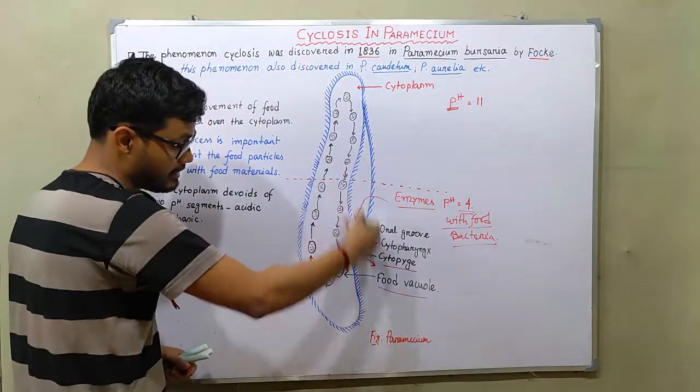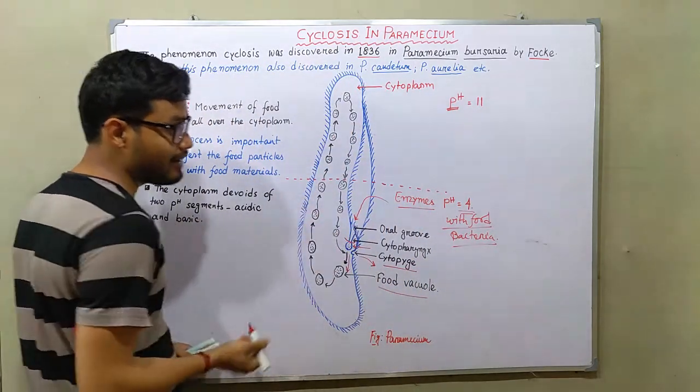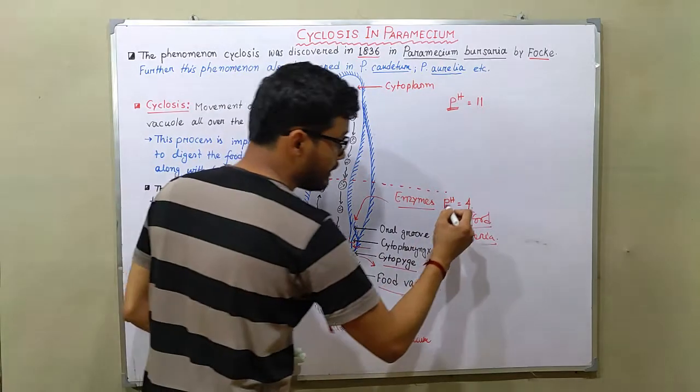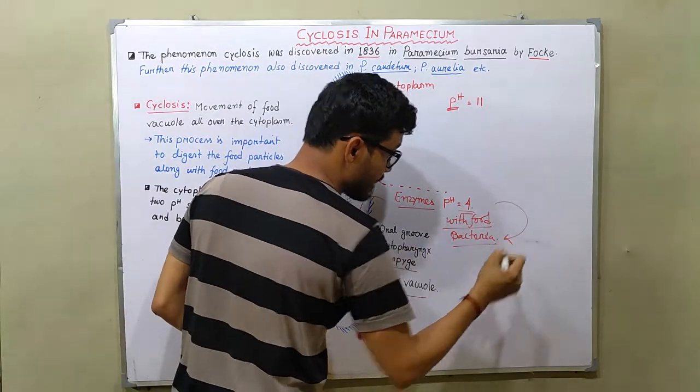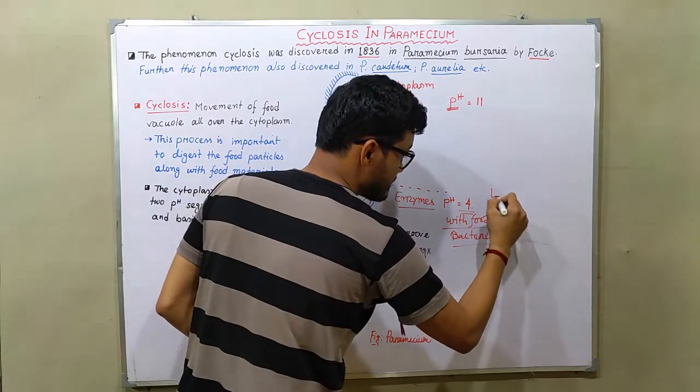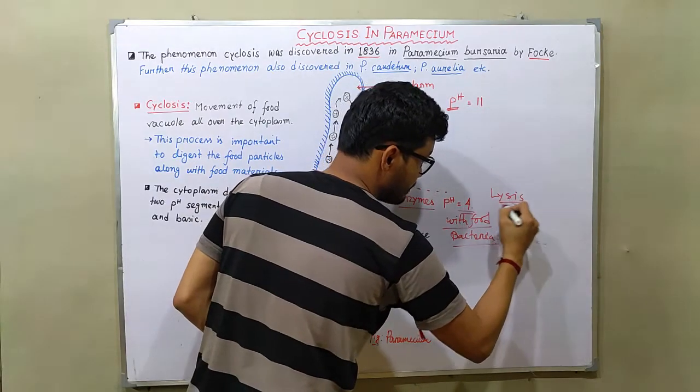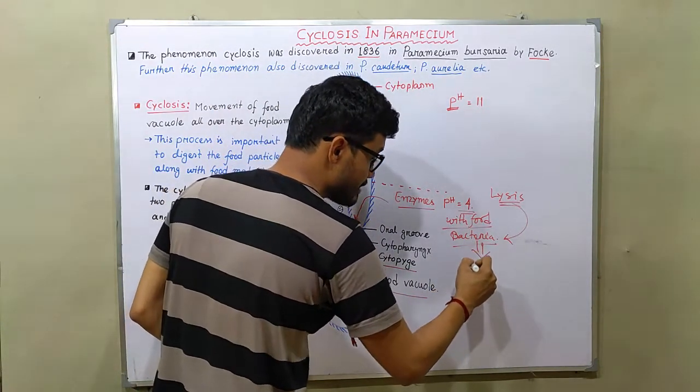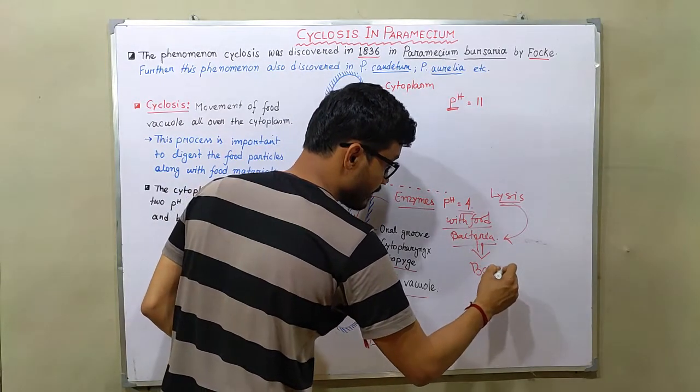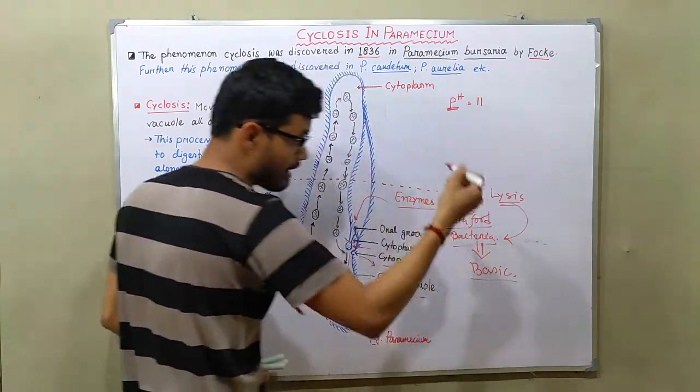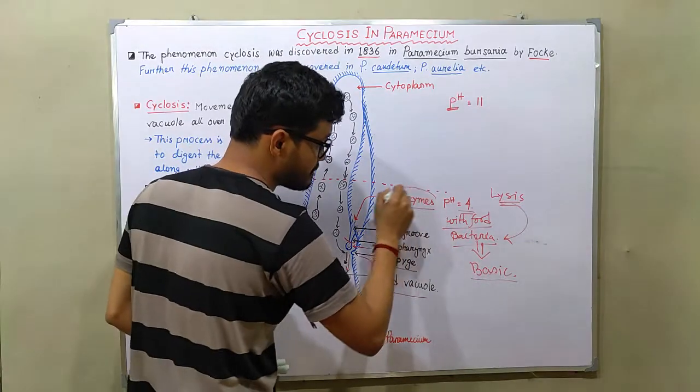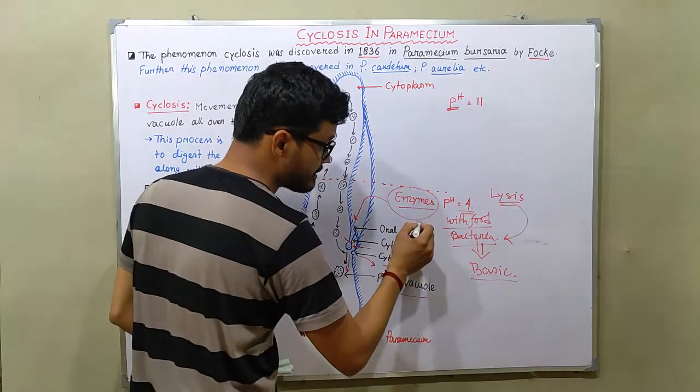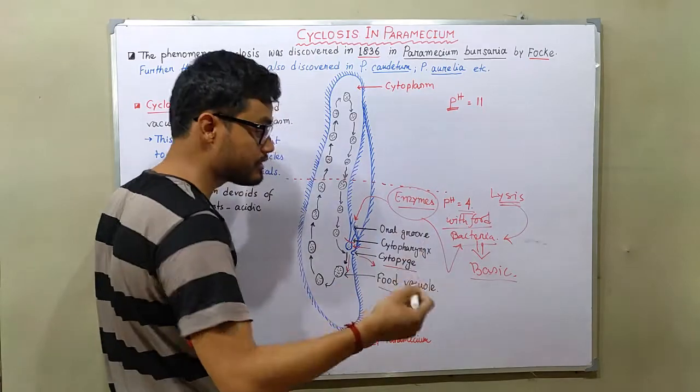And by activating these enzymes they actually lyse the cells of this particular bacteria, because the cell membrane is basic in nature. So first in acidic pH enzymes get activated and those enzymes lyse the bacteria or foods with the help of those enzymes.